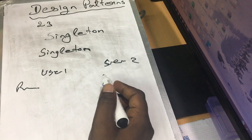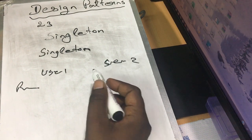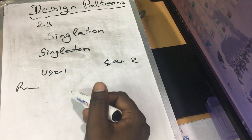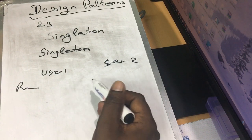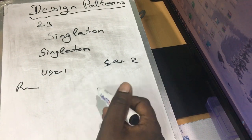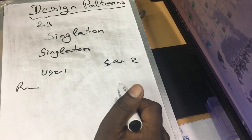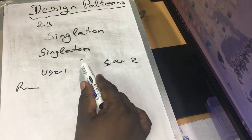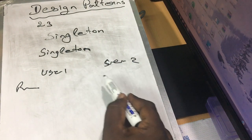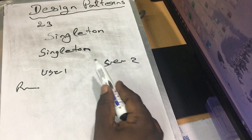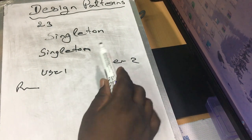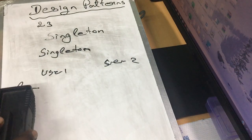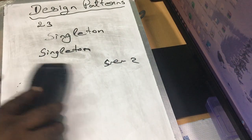What is the maximum use of Singleton? Because there is a connection string. The connection string is open and close repeatedly. Without one connection, we will use Singleton. In the pattern, we will use it.